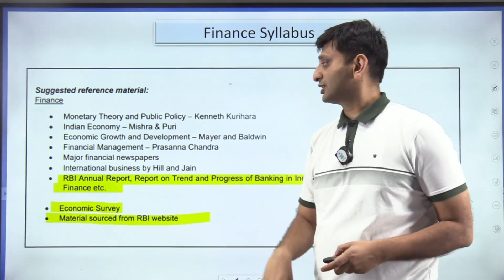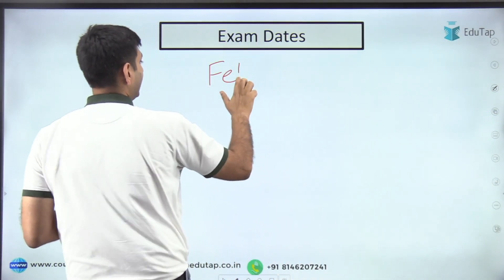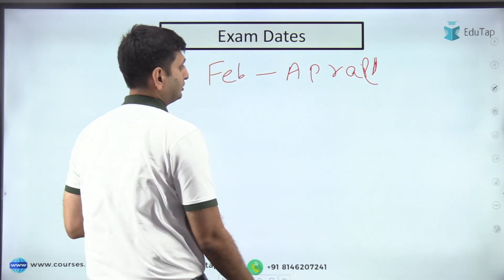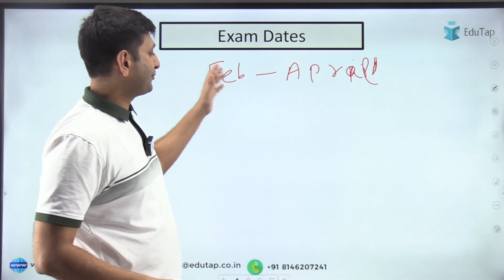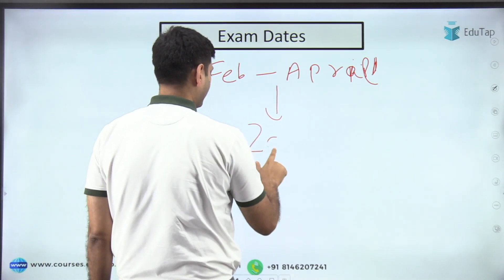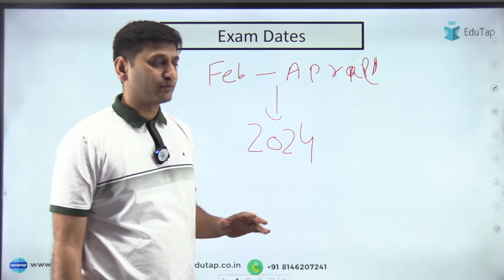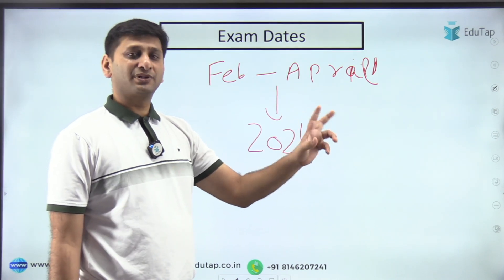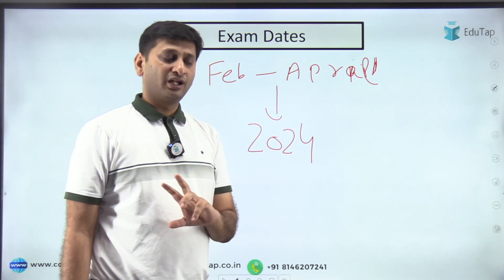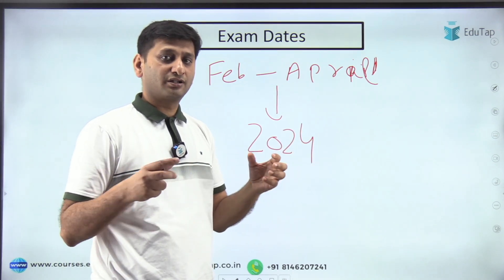Regarding exam dates, based on the last three years the RBI notification generally comes between February and April, and the exam is held between June and September. In 2024, we should expect a similar pattern — notification around April and phase one and phase two exams in June–July.